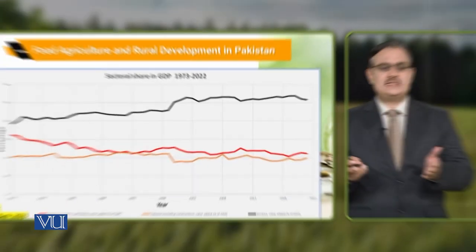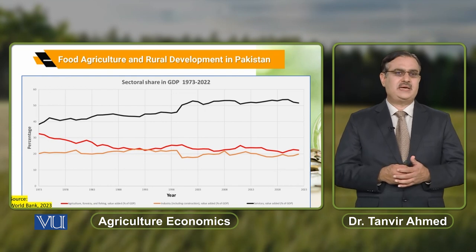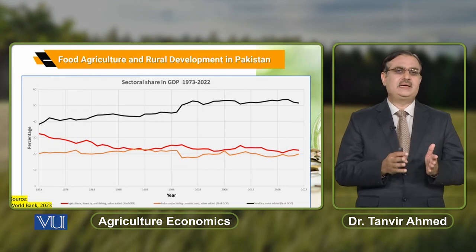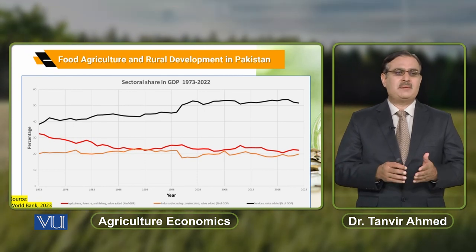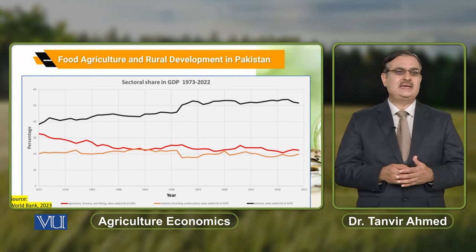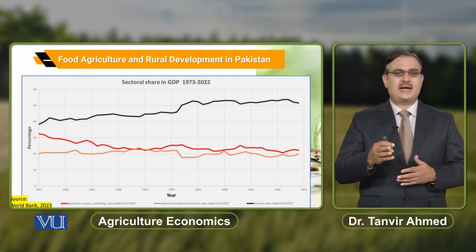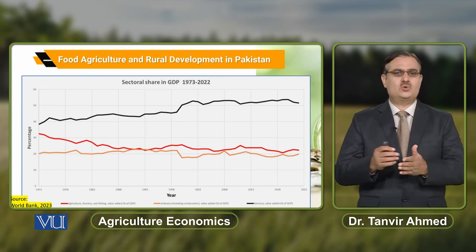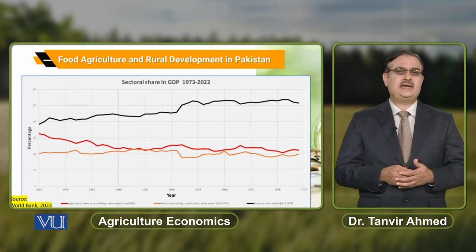If we talk about the share of the agricultural sector in total GDP, looking at this diagram, taking data from 1973 to 2022: the most low line — in 1973 approximately 20% — represents the industrial sector, and in 2022 it is still approximately close to 20%. It is the share of the industrial sector in total GDP.